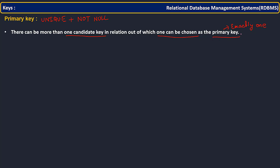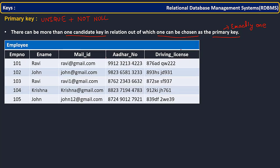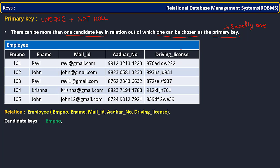That primary key is also one of the candidate keys. If you have only one candidate key, that is automatically the primary key. If you have more than one candidate key, then you select whichever is flexible for you. So whatever we saw in the earlier example — what are all the possible candidate keys — employee number, Aadhar number, and driving license are all candidate keys. You select whichever is flexible for you as a primary key.